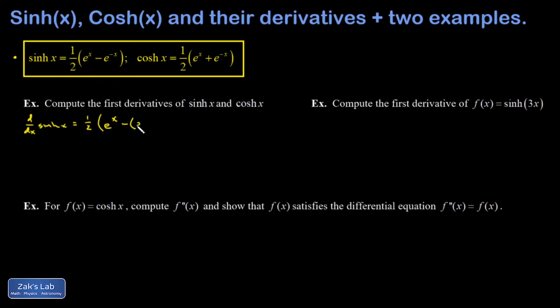That requires the chain rule. So you differentiate with respect to negative x, and you get e to the negative x. And then you have to multiply by the derivative of negative x with respect to x. That picks up an extra factor of negative one. And when I clean things up, I see that the second term becomes positive. And I recognize this as the cosh function. So the derivative of sinh is cosh.